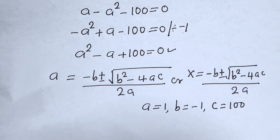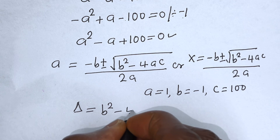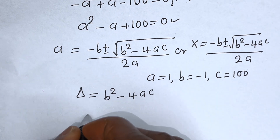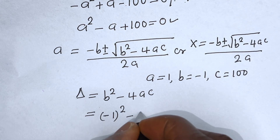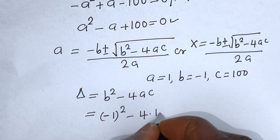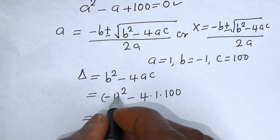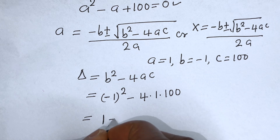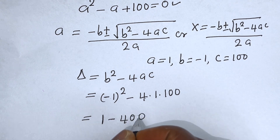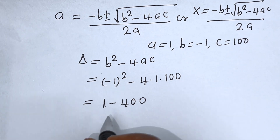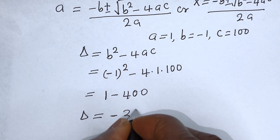We know that the discriminant D is equal to B squared minus 4AC. This is equal to minus 1 squared minus 4 multiplied by 1 multiplied by 100. That is 1 minus 400. Then, subtracting 1 from 400, we have D is equal to minus 399.